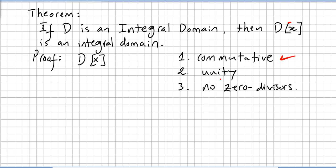Now for the unity: if 1 is the identity or the unity for D, it's easy to check that the polynomial f(x) = 1 will be the identity of the ring of polynomials. Very easy to check — unity checked.